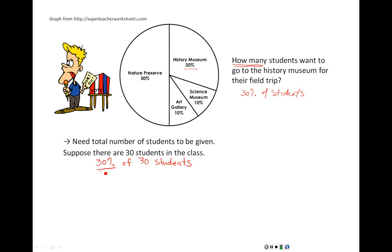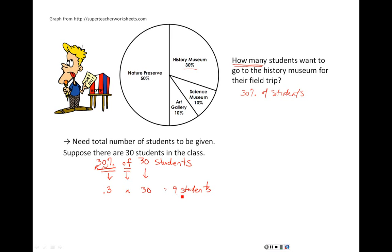Any time that we have a percentage given in a problem, we always need to convert it to a decimal form before we do any calculations. For 30%, to change a percent to a decimal, we move the decimal point — which right now is at the end of the number — two places to the left. So we can write 30% as .30 or just .3. The keyword 'of' is a good clue for multiplication. So to figure this out, we want to find .3 of — so times — 30. Do .3 times 30 on your calculator, and we end up with a total of 9 students in the class that would actually be interested in going to the History Museum.